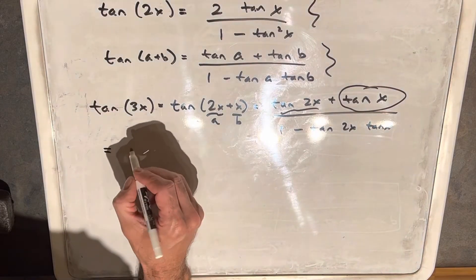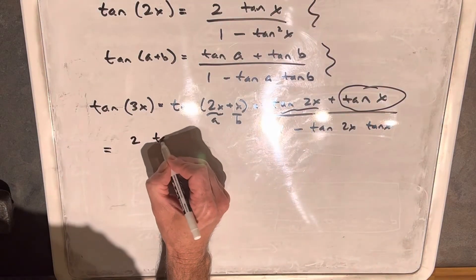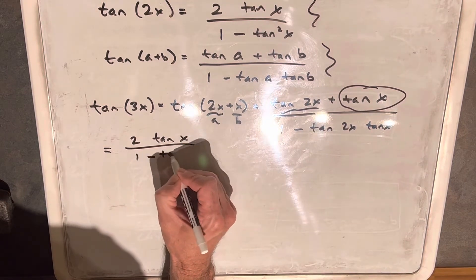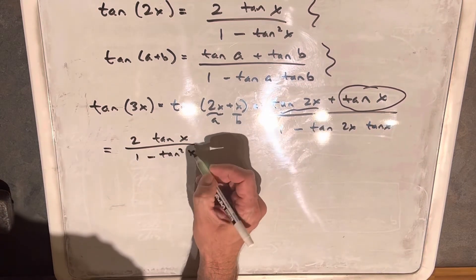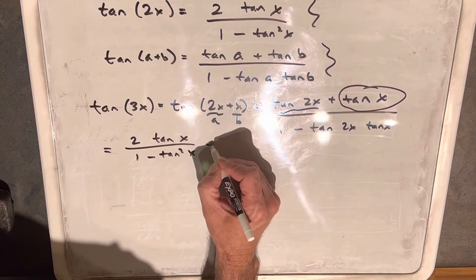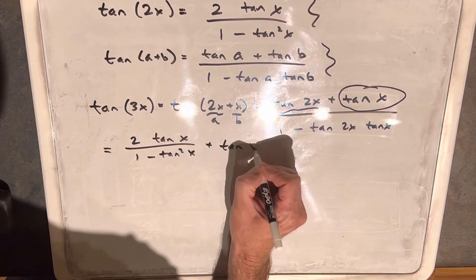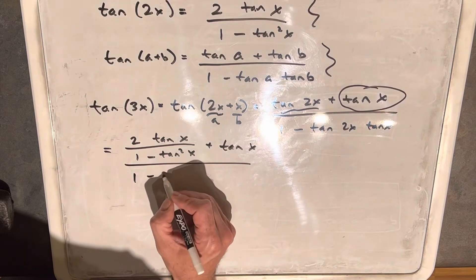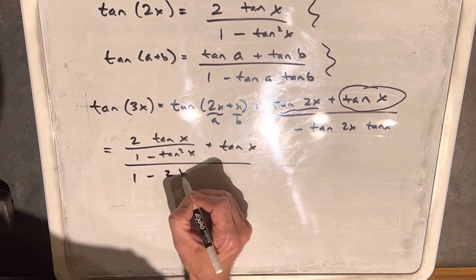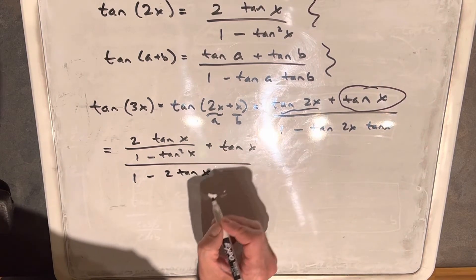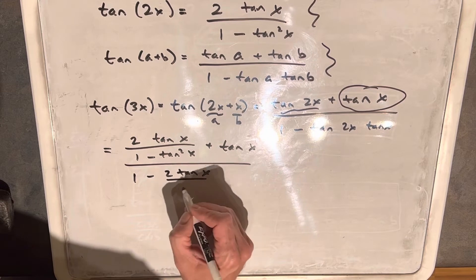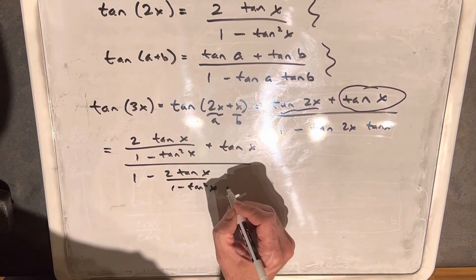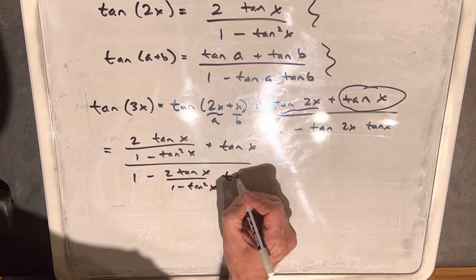Let's plug that in. We're going to have 2 tan x over 1 minus tan squared x, plus tan x, all over 1 minus the quantity 2 tan x over 1 minus tan squared x, times tan x.